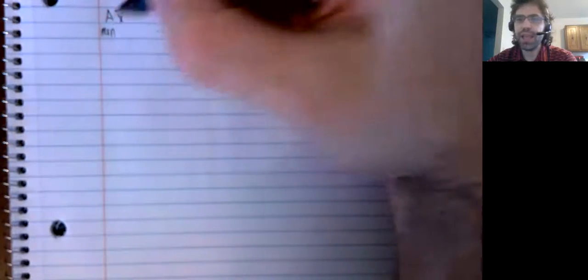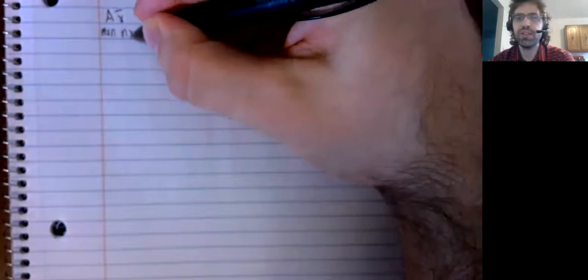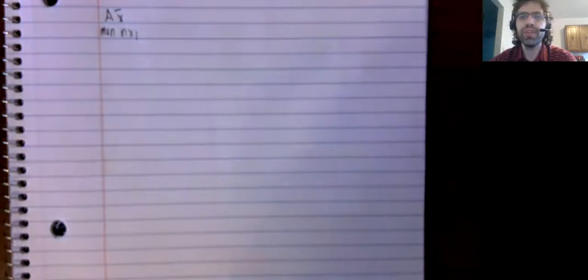Suppose we're multiplying a matrix A by a vector x. The matrix A is m by n, and the vector x is n by 1, so the product is defined. We know how to do this multiplication, but in this video, we'll introduce another way to think about it.